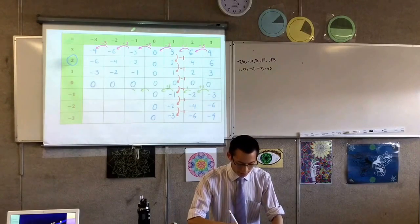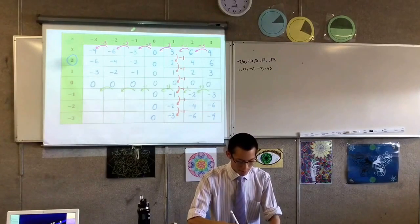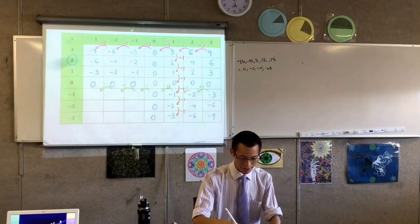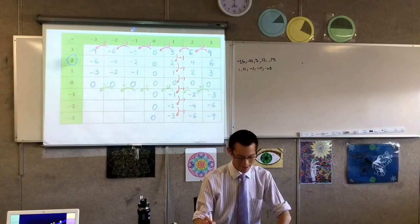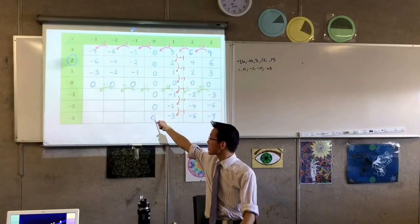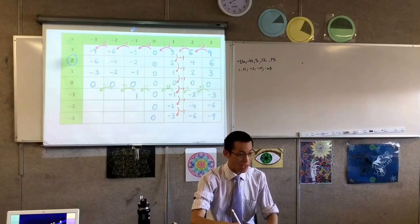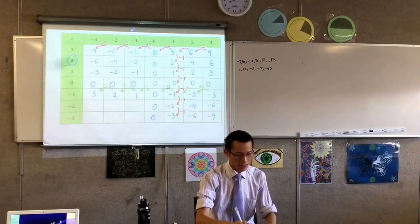So therefore, if I continue going this way, I'm going to add one every time. Add one, add one, add one. This is getting pretty colorful and busy, isn't it? So these numbers, if I fill them in from right to left, I'm going to have one, then two, then three.